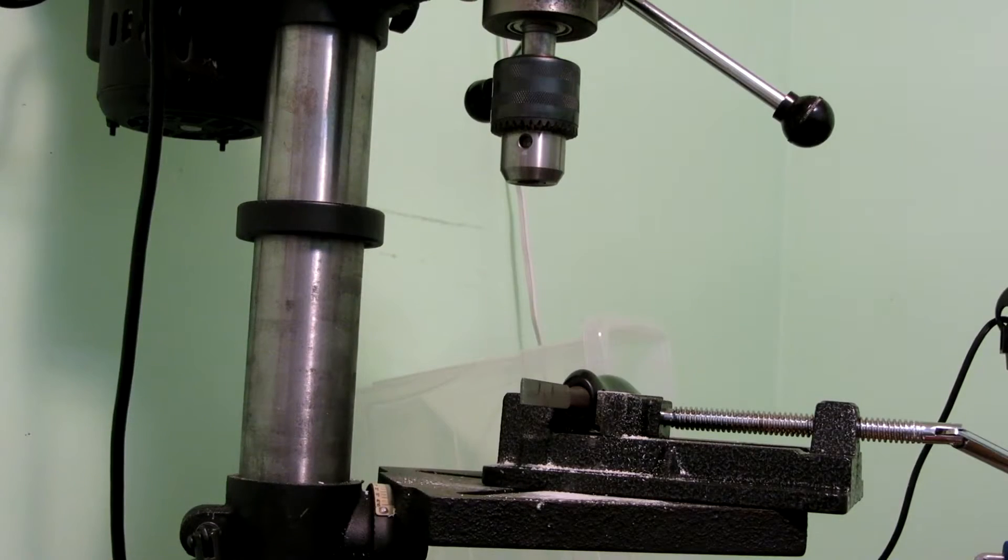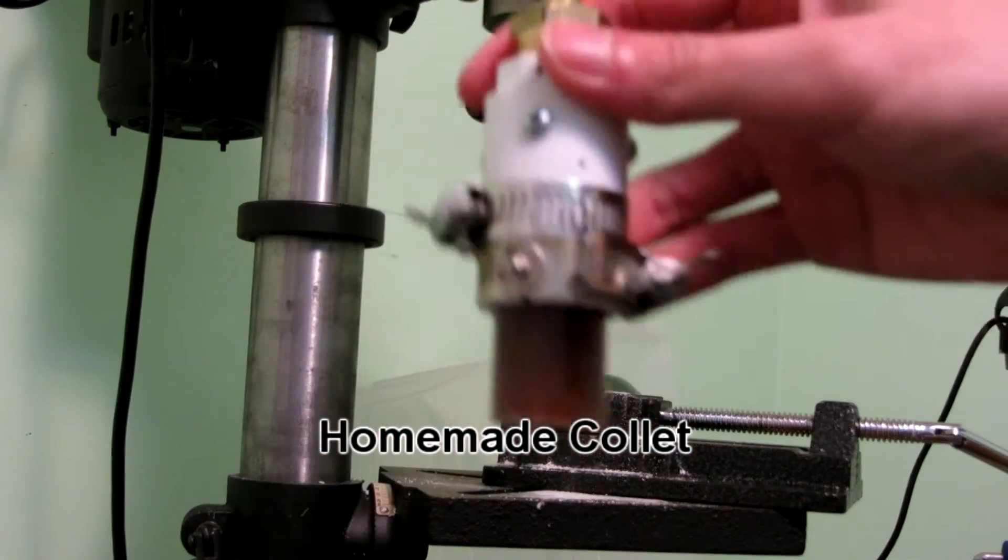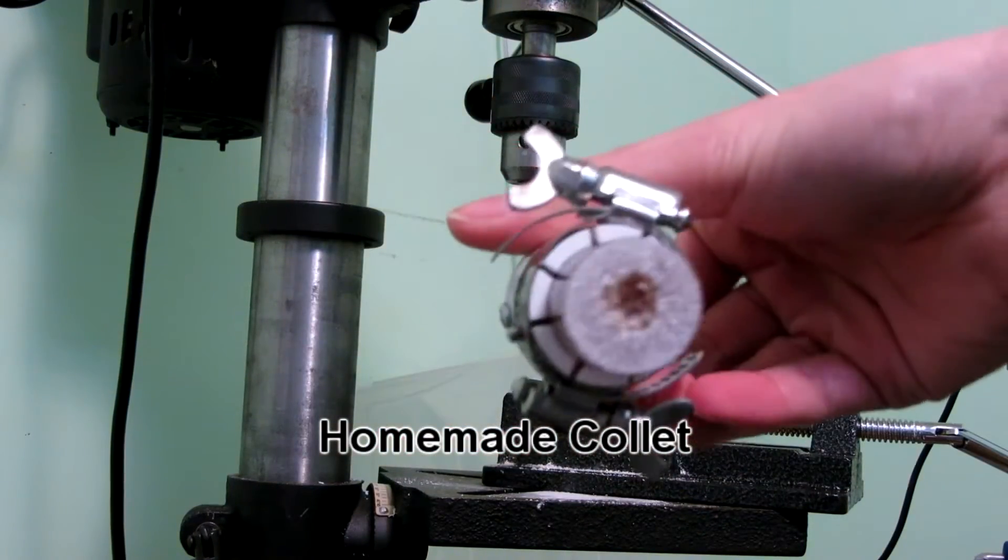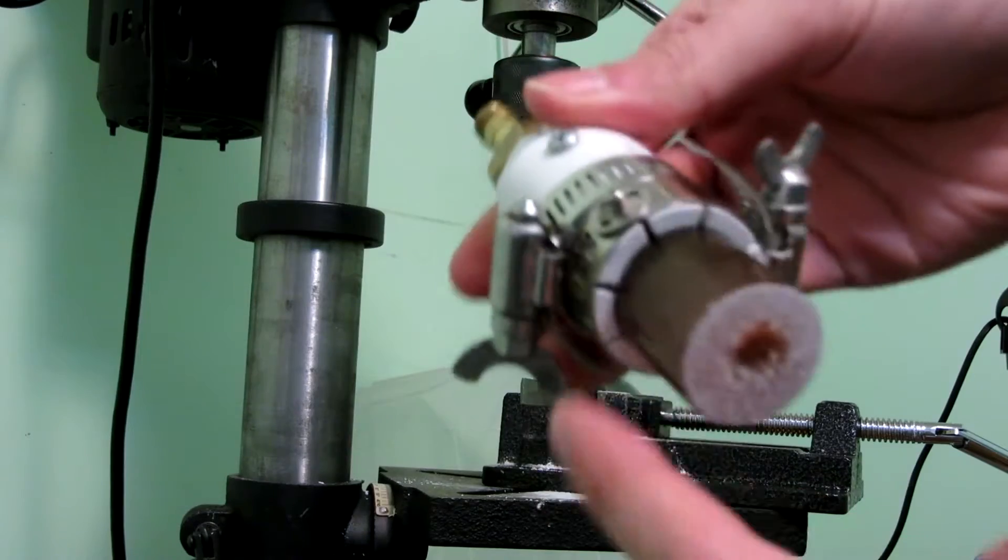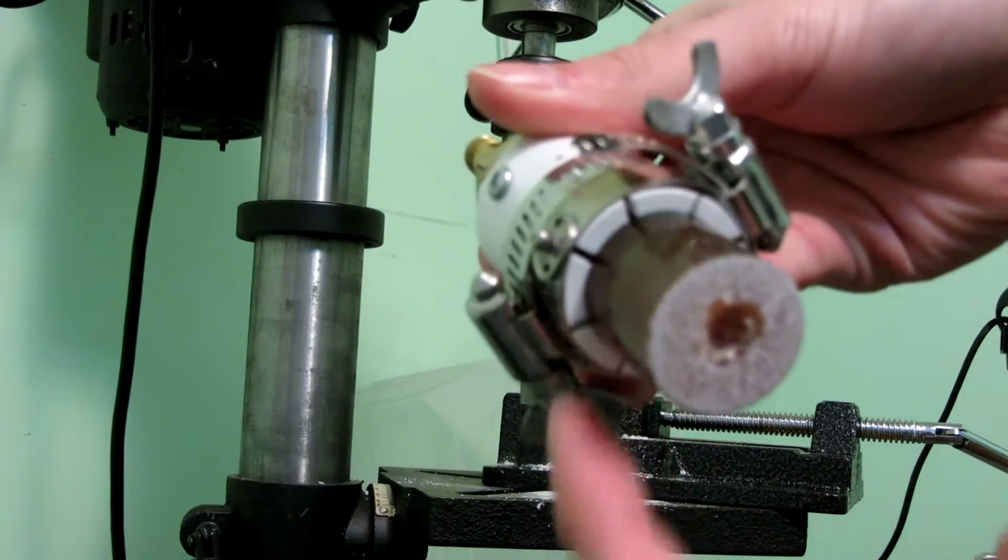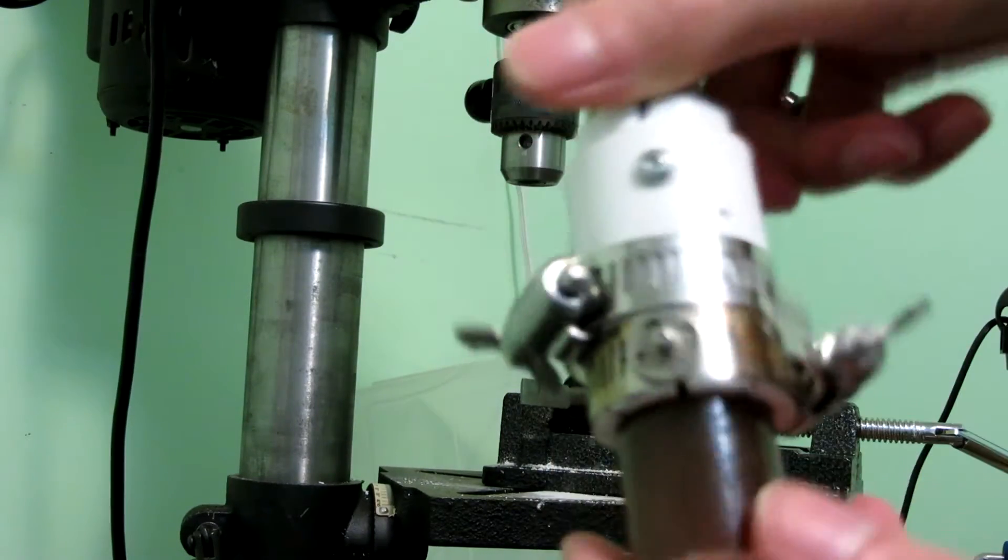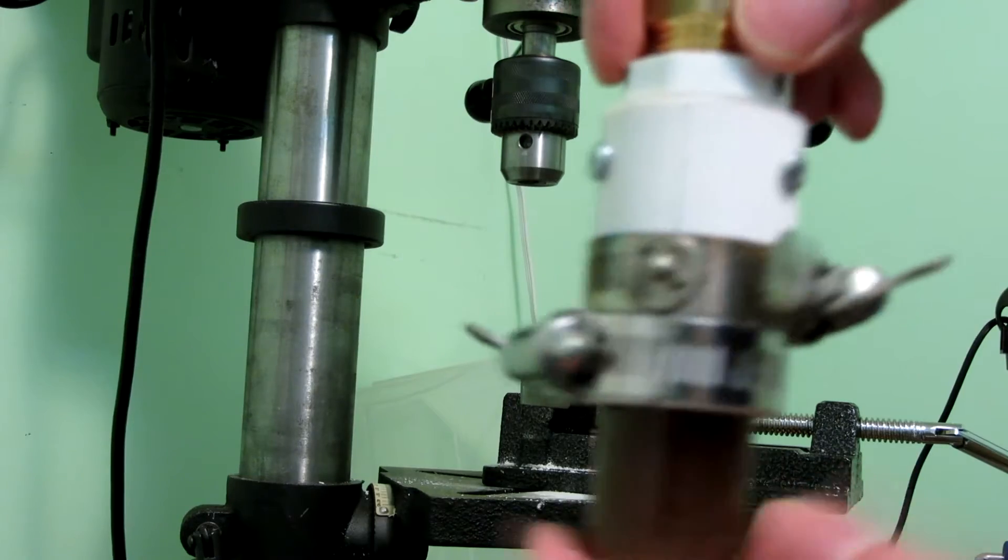I'm going to try demonstrating this thing. This is a homemade collet made from PVC. It has eight slits in it. I have these two hose clamps on it.